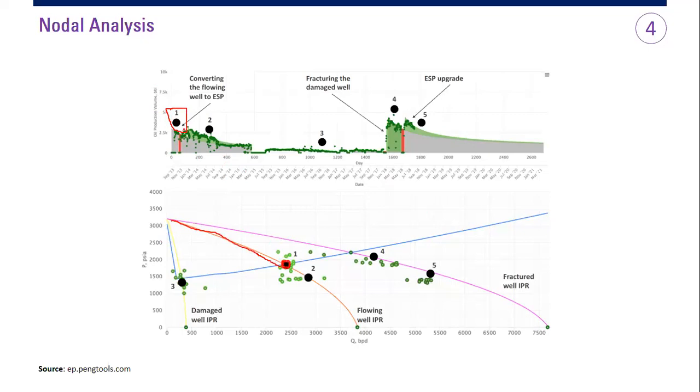And then we go further. We convert the flowing well to ESP well and the production decrease. But there is no damage. There is no formation damage. We have our condition here. But it is located on the same IPR curve, which means that we don't have any formation damage. Here.